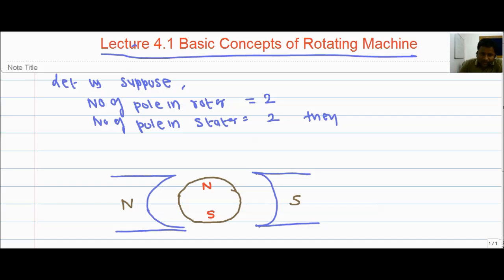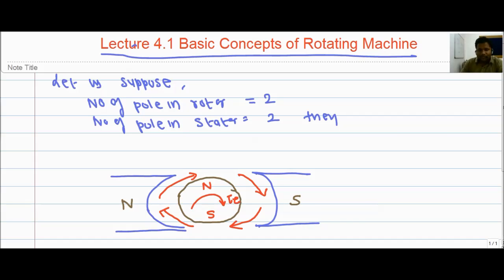The north of the stator will repel the north of the rotor. Similarly, the south of the stator will attract the north of the rotor. The south of the stator will repel the south of the rotor, and the north will attract the south. So we can say that a uniform torque is generated in the rotor. There is no problem in the rotation of the rotor when the number of poles in the rotor and stator is the same.